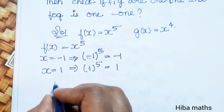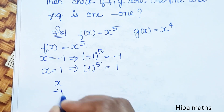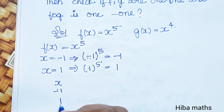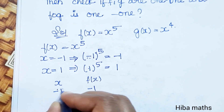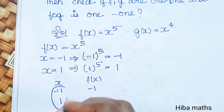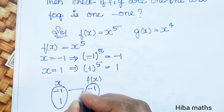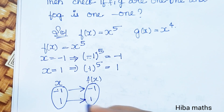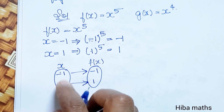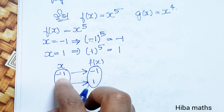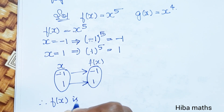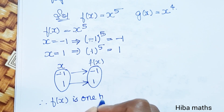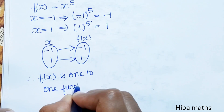For x = -1 and x = 1, f(x) gives different values, so f(x) is a one-to-one function.